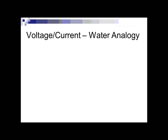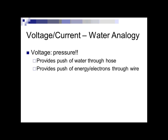The difference between voltage and current is best described with a water analogy. Voltage is like the water pressure in the system — it provides the push of water through a hose. Voltage provides the push of energy for AC and electrons for DC through the wire. The greater the voltage, the greater the push, but that doesn't necessarily mean there's going to be a lot of flow — it depends on how much water is in the system.